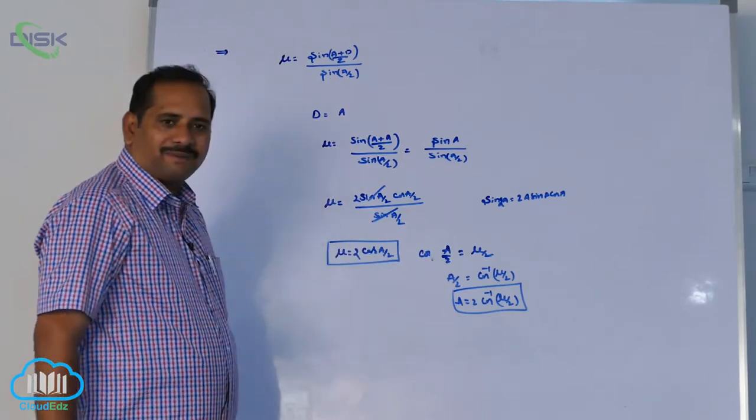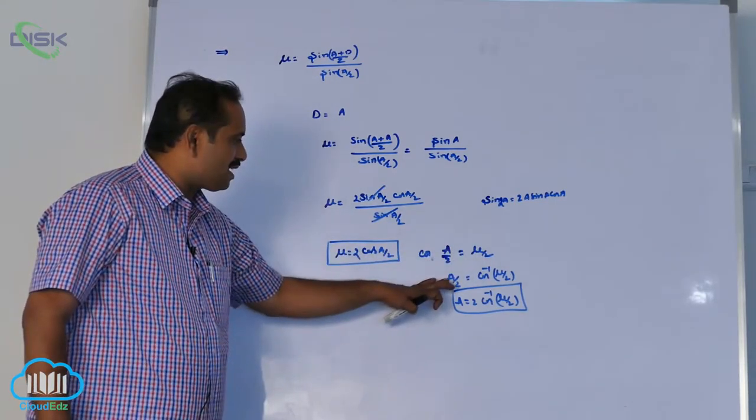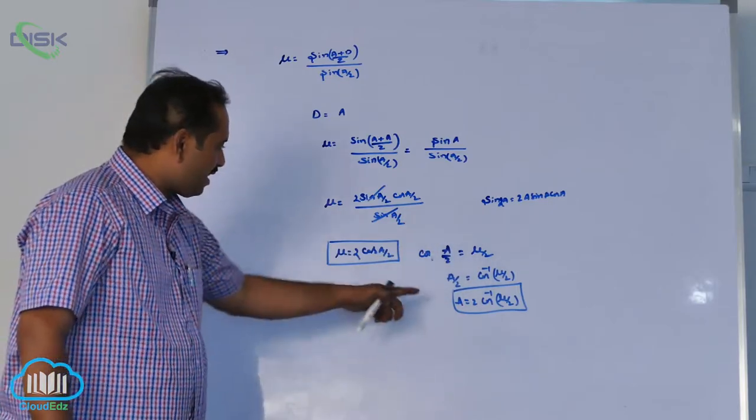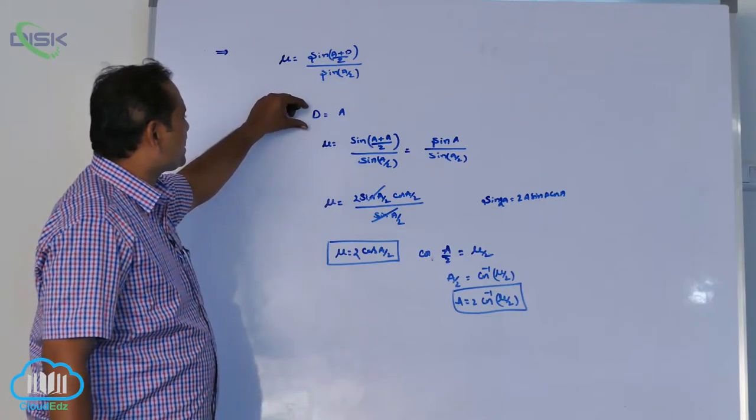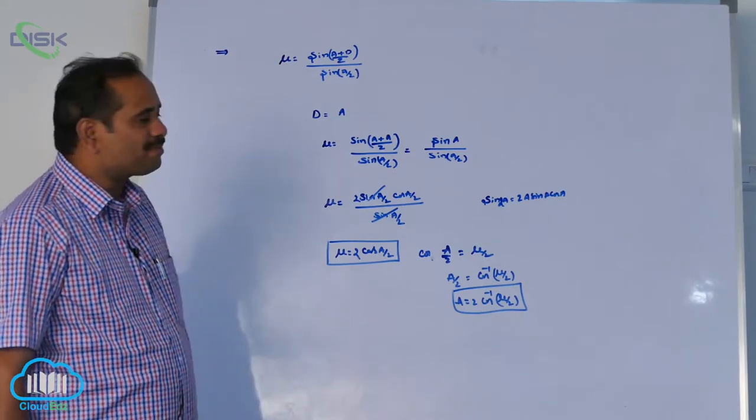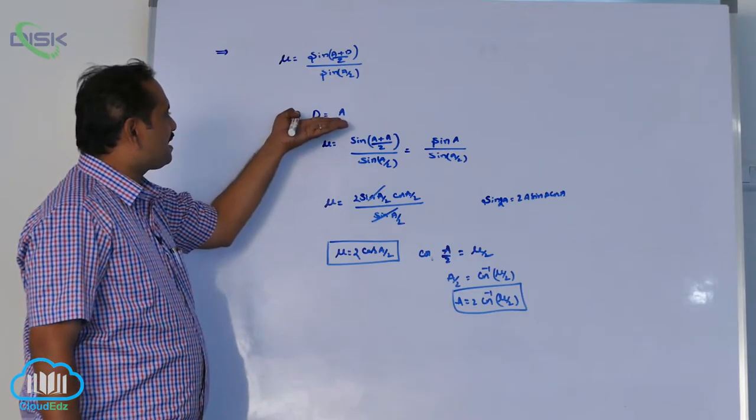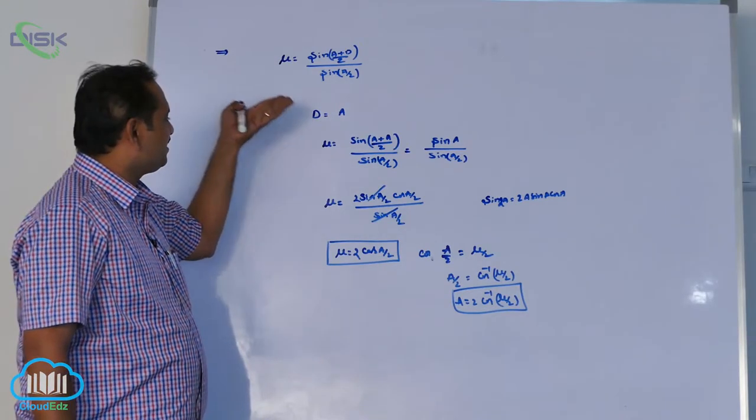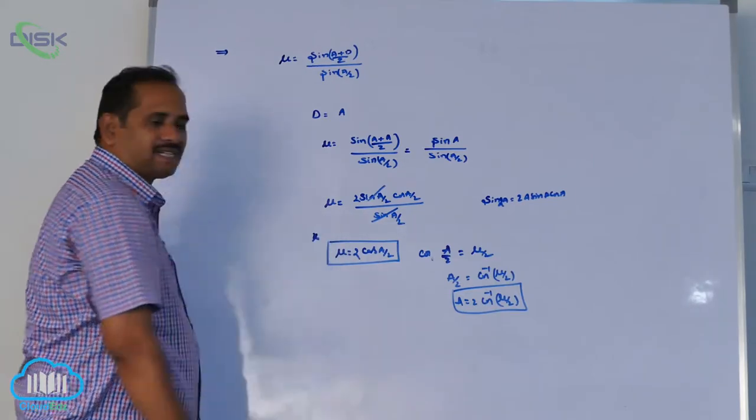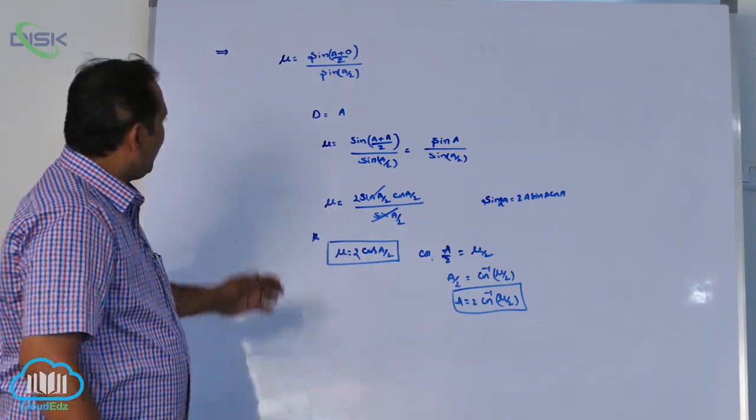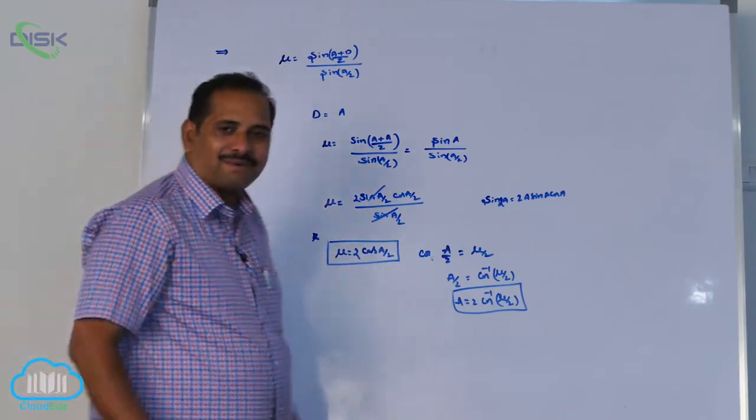Mu equals 2 cos a by 2. Cos a by 2 equals mu by 2. A by 2 equals cos inverse mu by 2. A equals 2 cos inverse mu by 2. Some simple tricky questions based on this prism concept. Once again, angle of the prism equals angle of deviation, then refractive index of the prism. And sometimes we can use this as a tricky question. Look at it please.